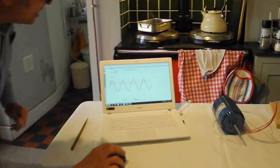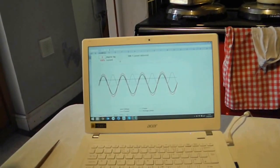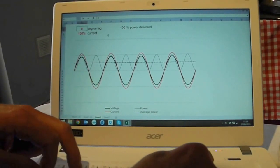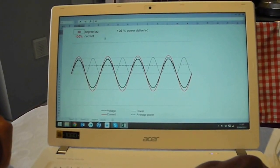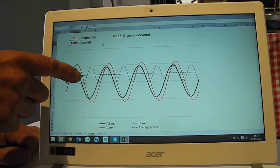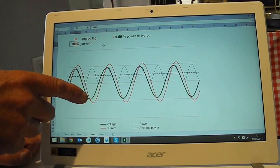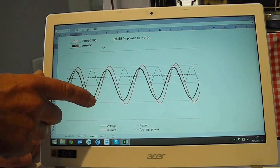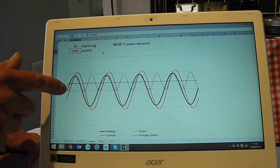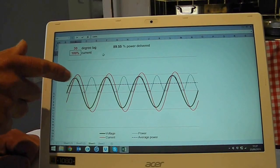They cause the current waveform to lag behind the voltage waveform. So in this picture here I can displace the current waveform by one twelfth of a cycle, 30 degrees, and you see that the voltage comes up and the current lags behind.